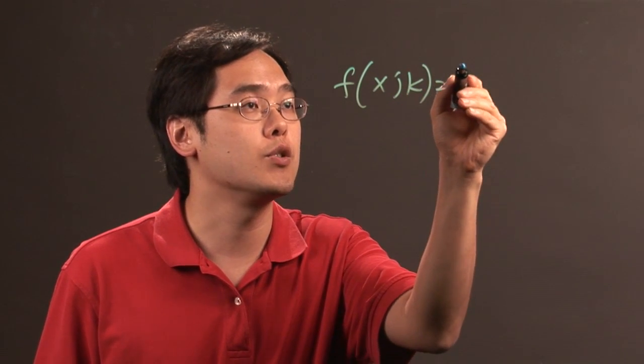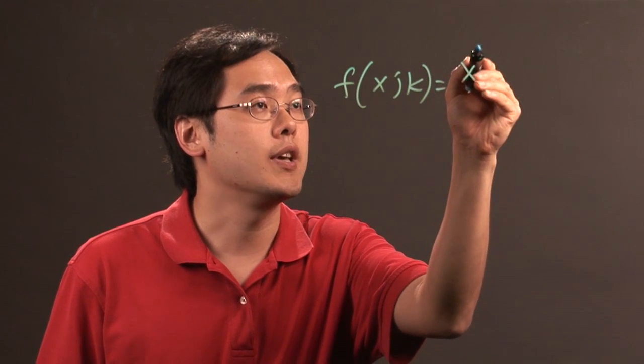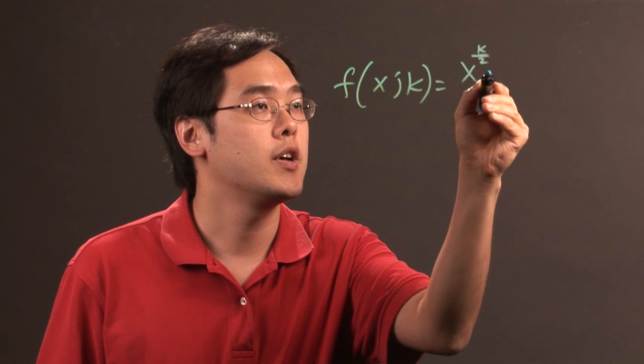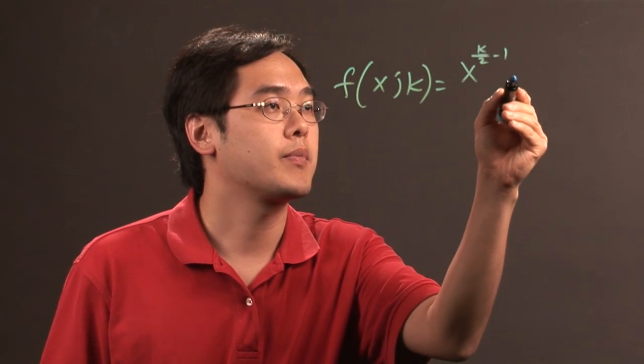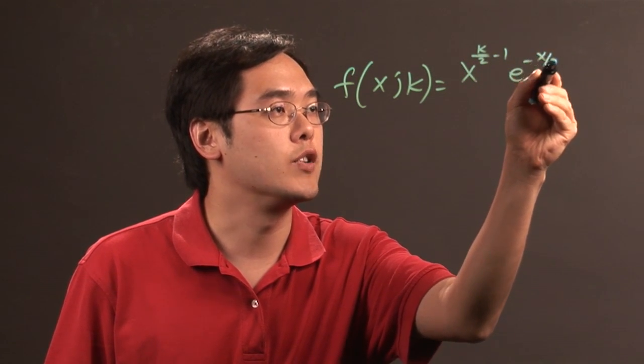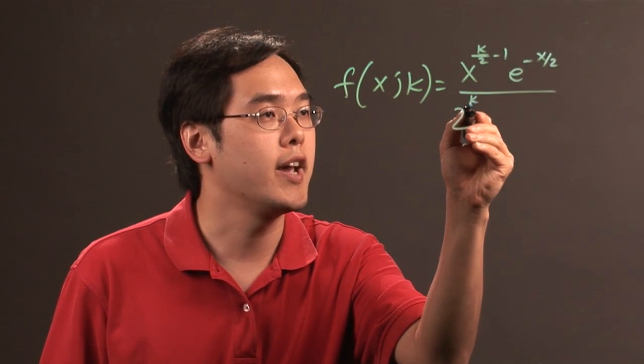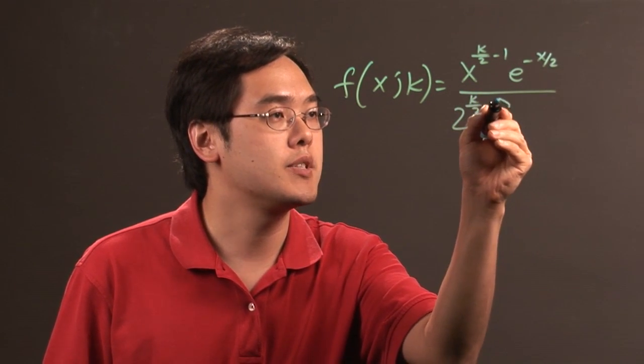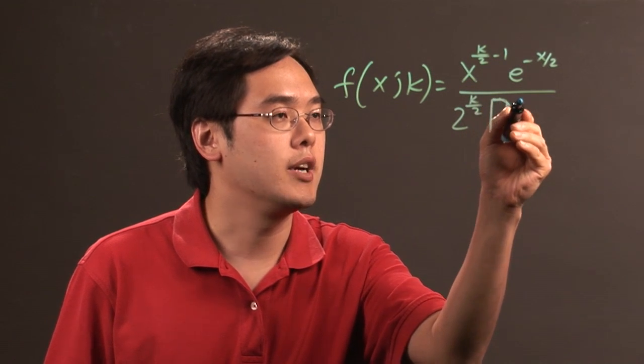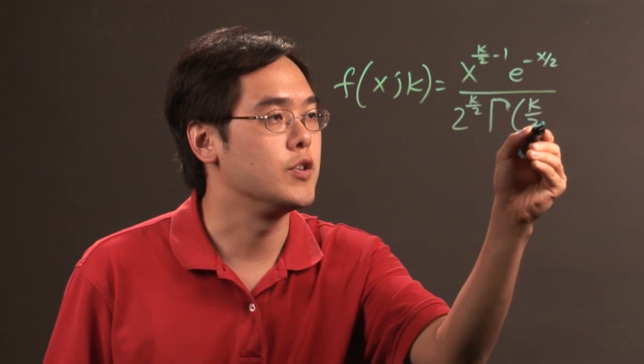which is equal to x to the k over 2 minus 1 times e to the negative x over 2 over 2 to the k over 2 times gamma of k over 2.